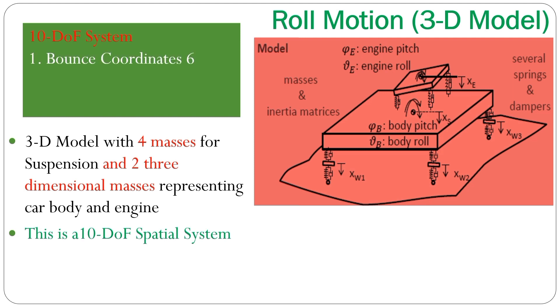Adding together all the coordinates that we are now using, we have our detailed 10 degree of freedom spatial system with six bounce coordinates, where four bounce coordinates are for the suspension system, and the other two are for the car body and for the engine. Additionally, we have two pitch coordinates and two roll coordinates for car body and engine. Finally, we have a 10 degree of freedom spatial system.